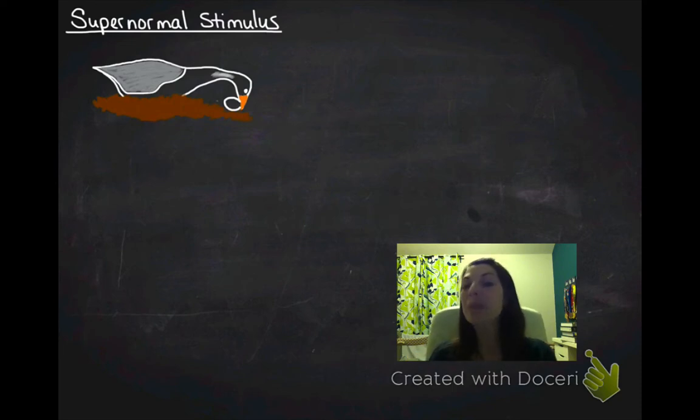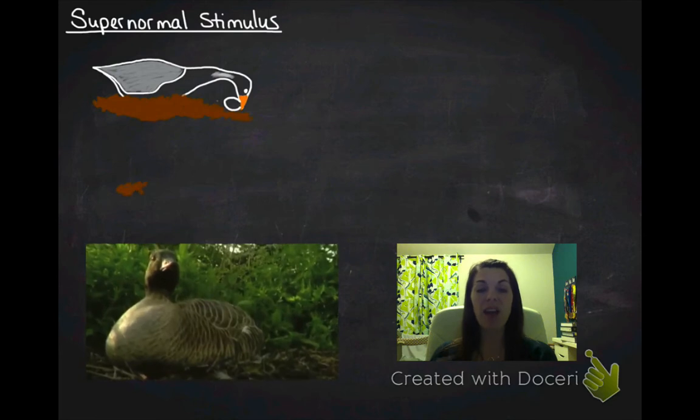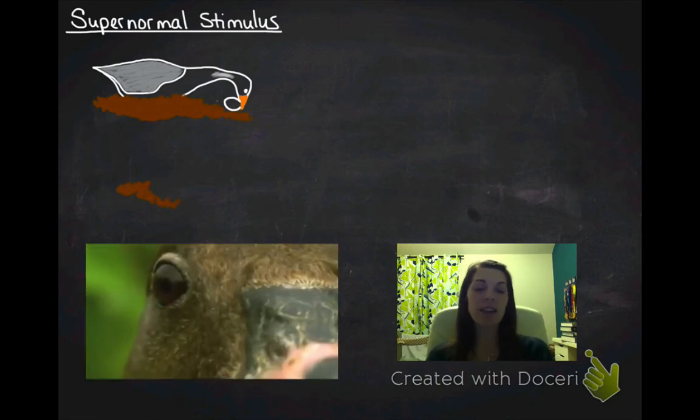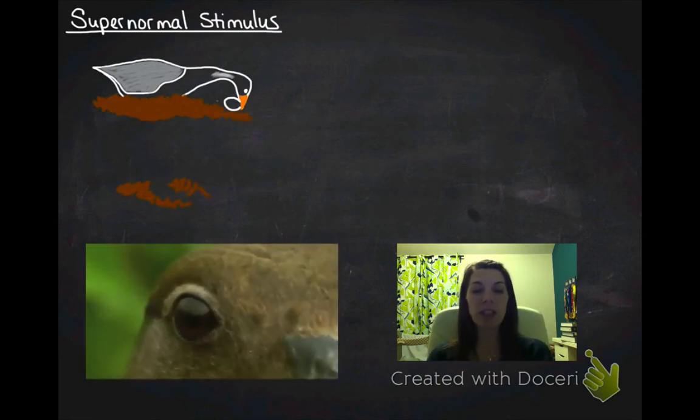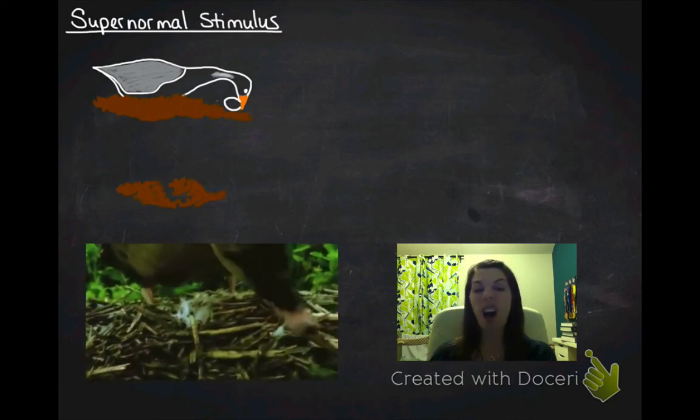Now, where the supernormal stimulus comes in is the fact that these geese will actually respond to objects other than their eggs. If you take the same goose that normally responds to its own egg and you present it with, say, an ostrich egg,